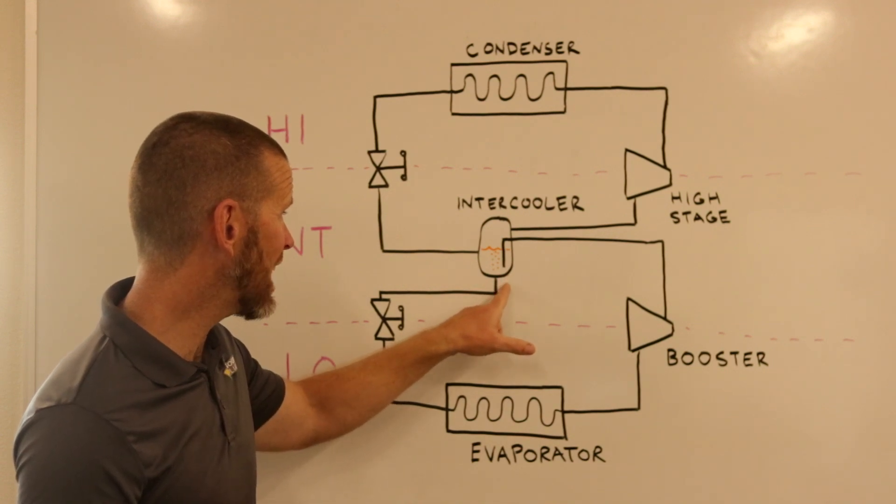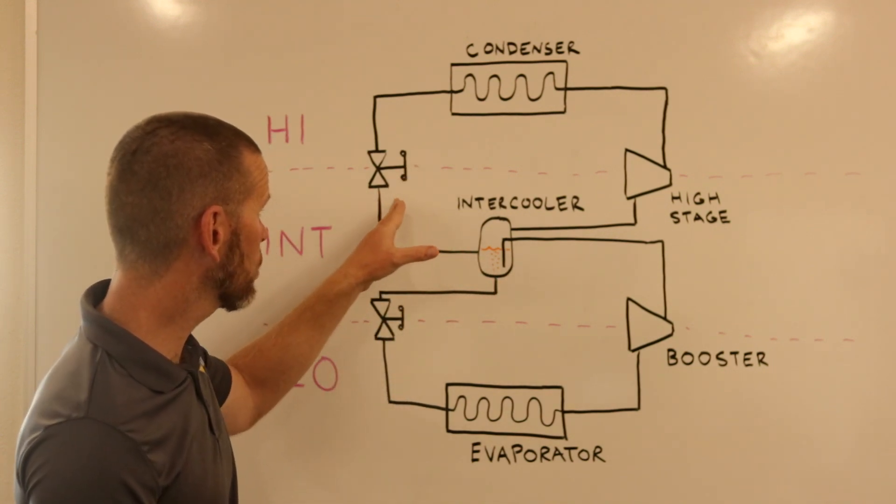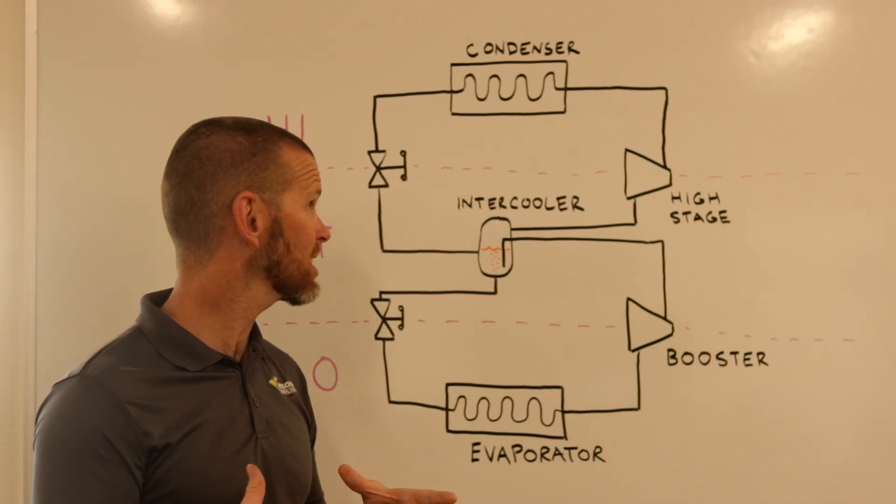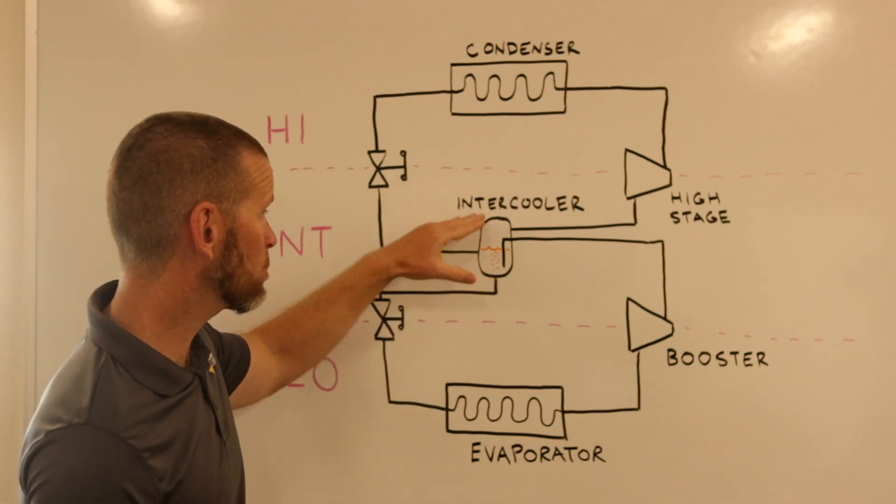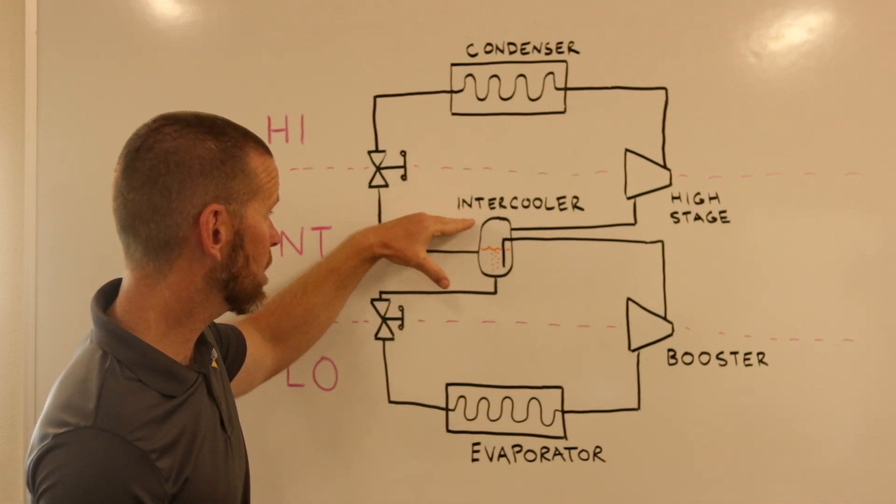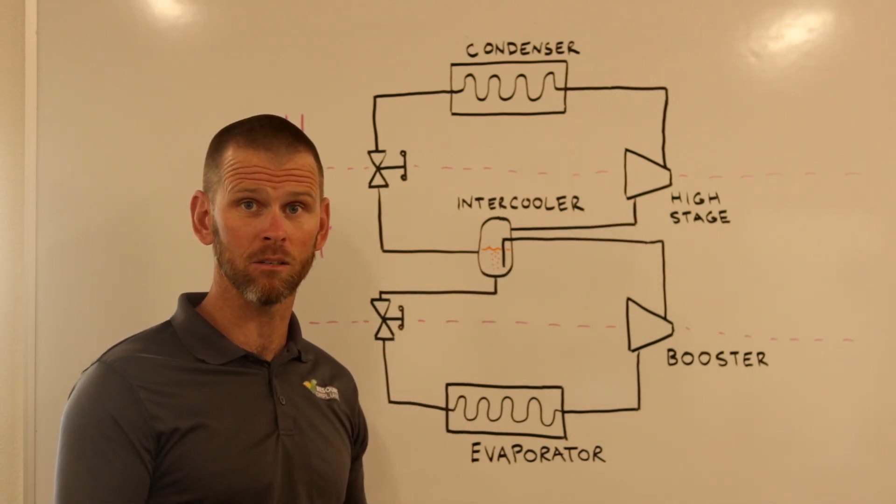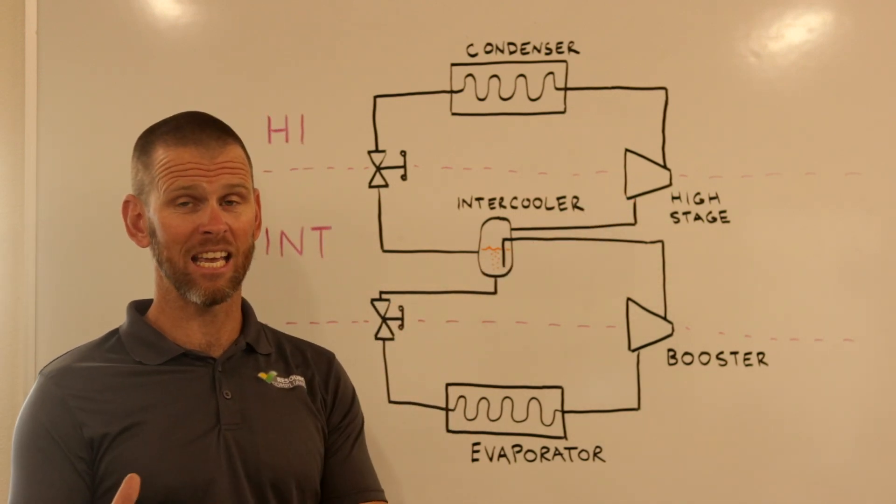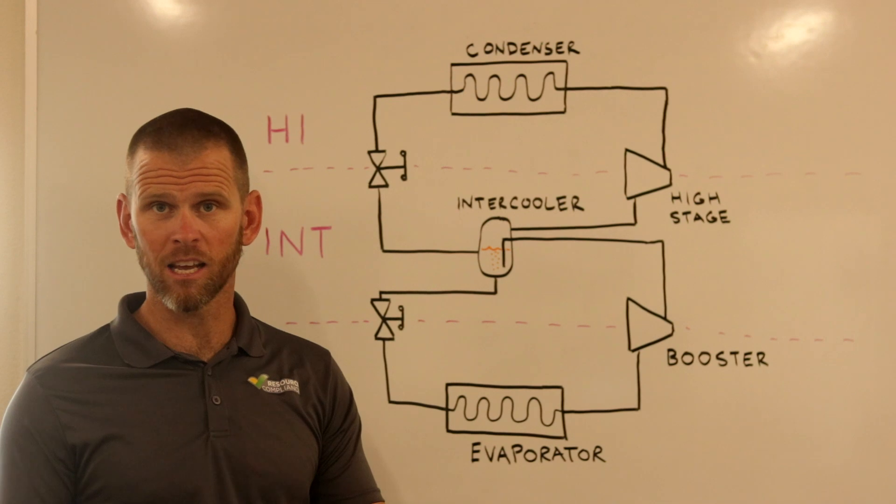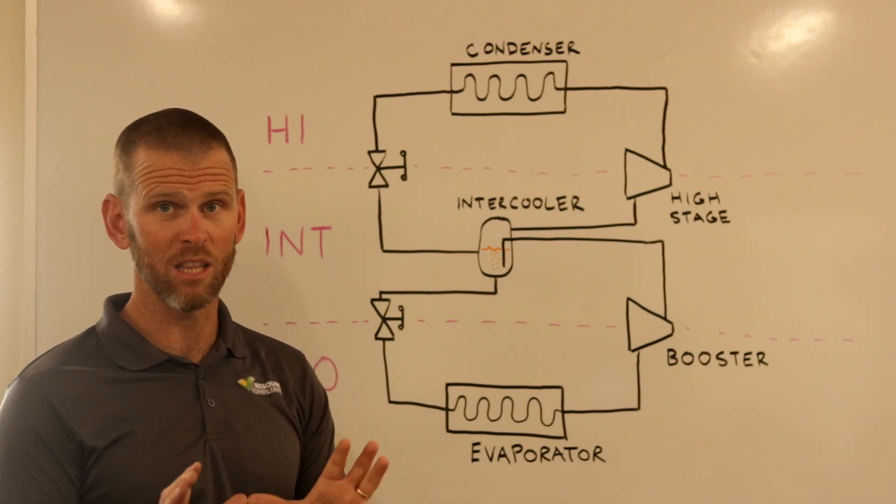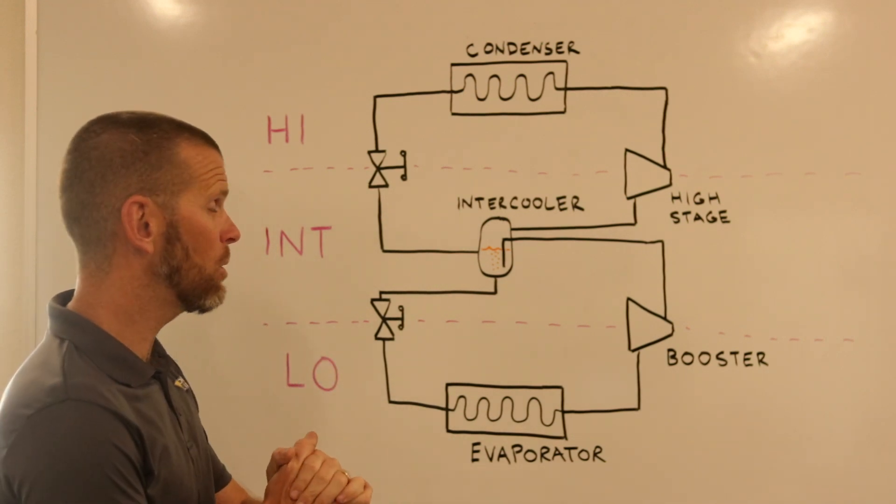In the process of going through the expansion device, we know that flash gas is formed. So that flash gas will tend to rise to the top of the intercooler where it can now be returned to our high-stage compressor. So that vapor we've taken care of, by not sending it to any evaporators, it's going straight back to the compressor where it can be recompressed.